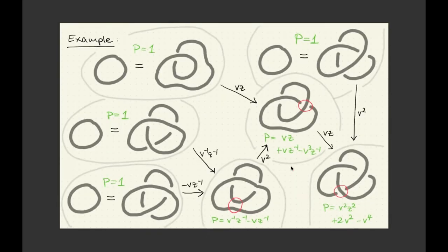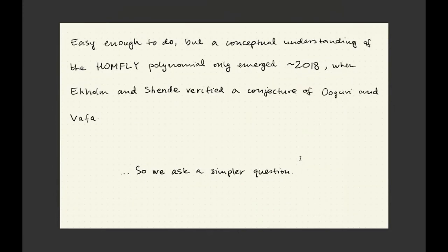I will not be able to take you through all the steps of this computation, but hopefully this slide will convince you that this is completely mechanical. You just start with a curve — a representation of your curve, usually some sort of planar drawing — and then you make a few modifications to it. If the computation branches, eventually all the branches leave with the trivial knot, where you know the value is equal to one, and then you work your way back to the original curve and read up a value. Please take my word for it: this is simple enough to do. It's mechanical. Anyone can do it, basically.